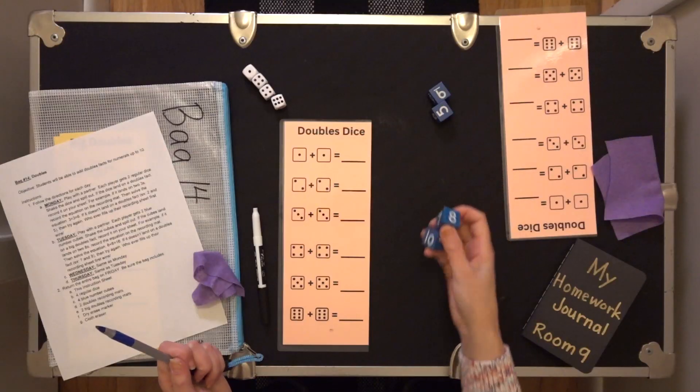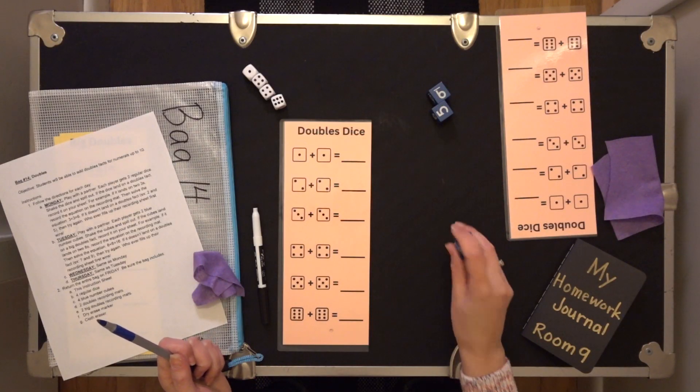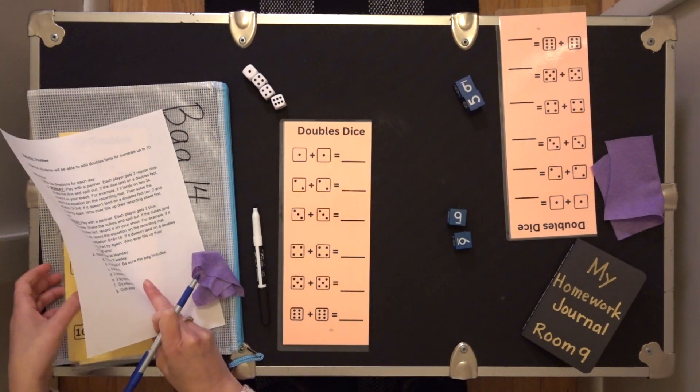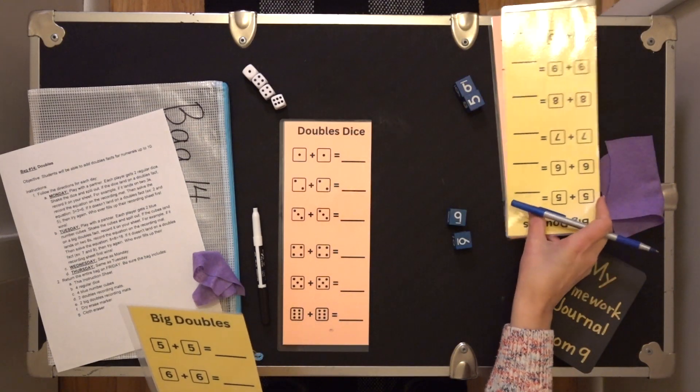So that's on Monday. On Tuesday, we put these guys back and we're going to play the same game, but we are going to use the big doubles number cubes. So he'll get some. I will get some. We're going to use the recording sheet for the big doubles.